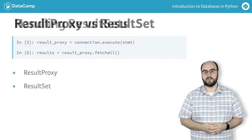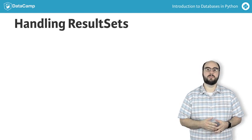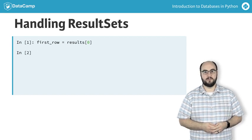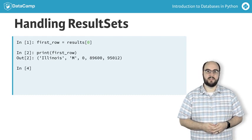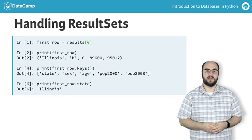Let's learn how to work with a resultSet. In this example, we're using the results from the prior query. We'll start by getting the first row of the results by using an index of zero. By printing the first row, we can see the data it contains. If we want to know what columns are in the row, we can find out by using the keys method. Finally, we print the value of the state column from the first row by using the column name as an attribute on the row object.